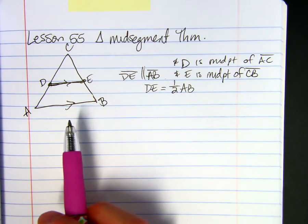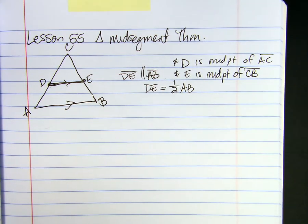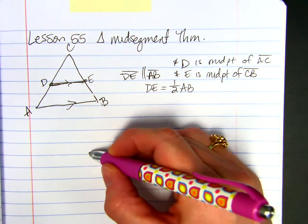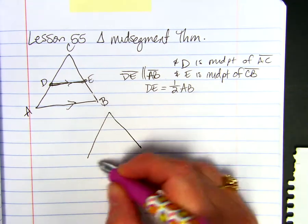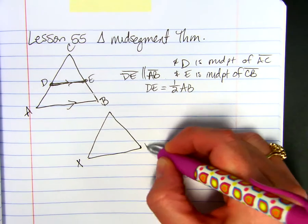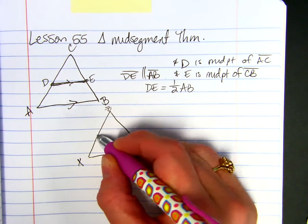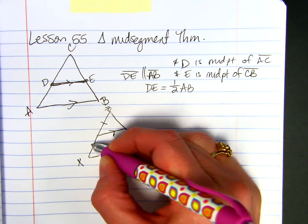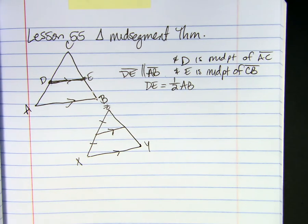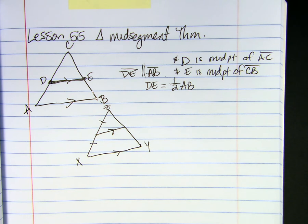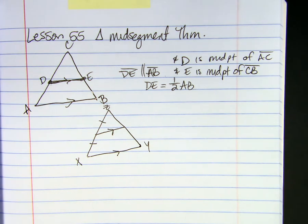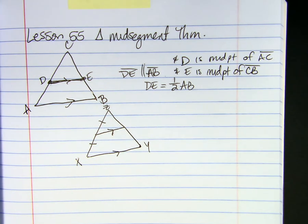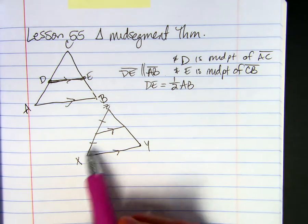There is a second theorem that says if this is all you know about your triangle, that you have a line drawn parallel to the third and these two sides are congruent. So if a line is parallel to one side of a triangle and it contains the midpoint of another side.